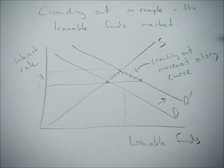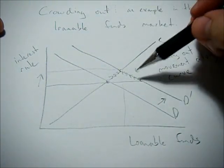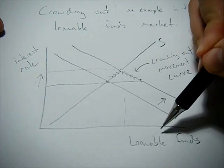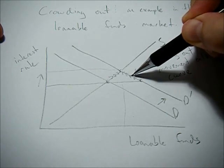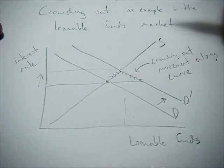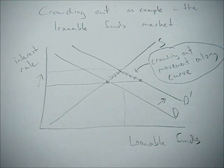So that's how expansionary fiscal policy can increase the interest rate, which decreases private firms and consumers the amount of loanable funds they receive. And we call that phenomena crowding out. And that's how it works looking at the loanable funds market.